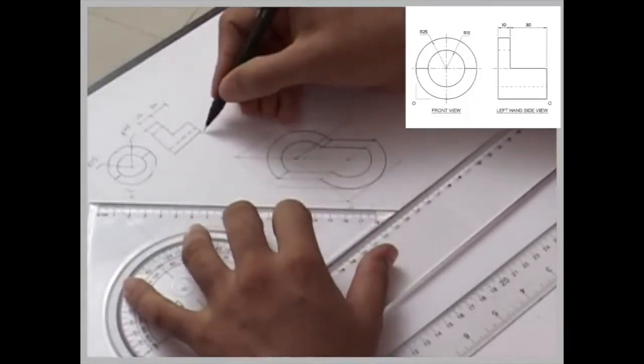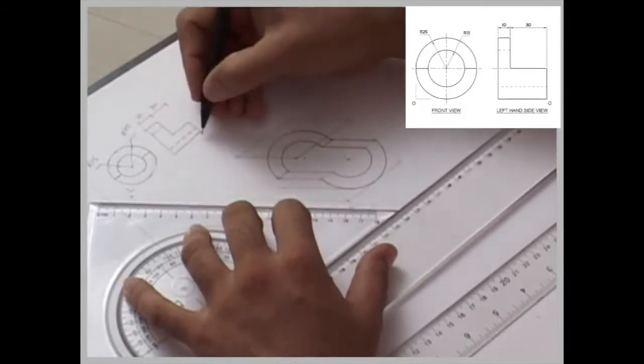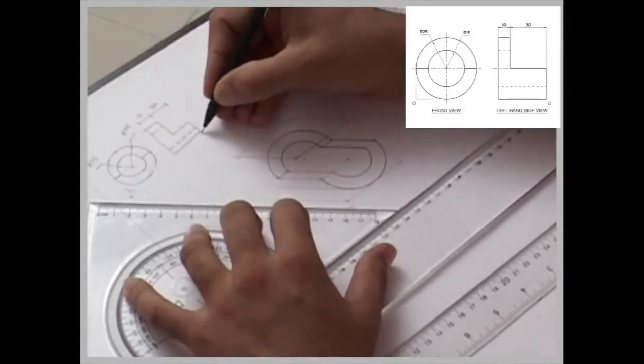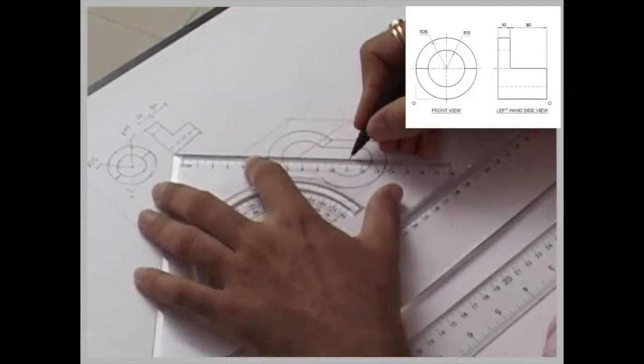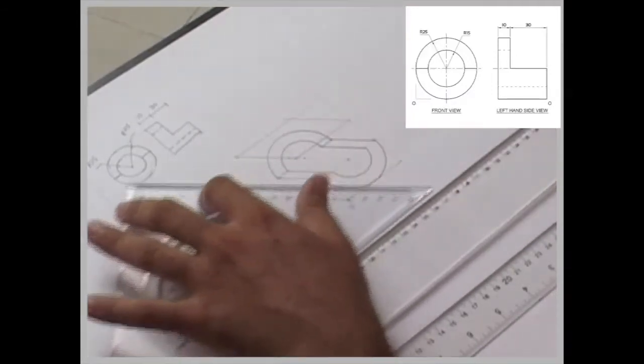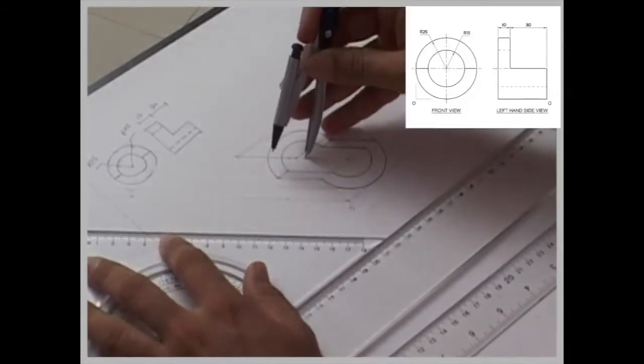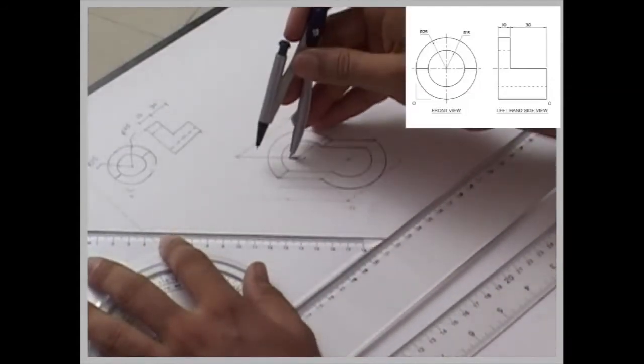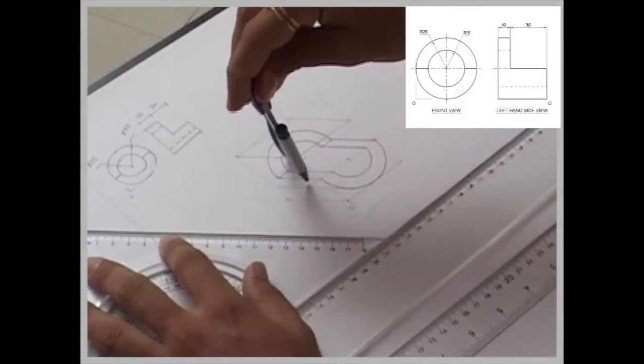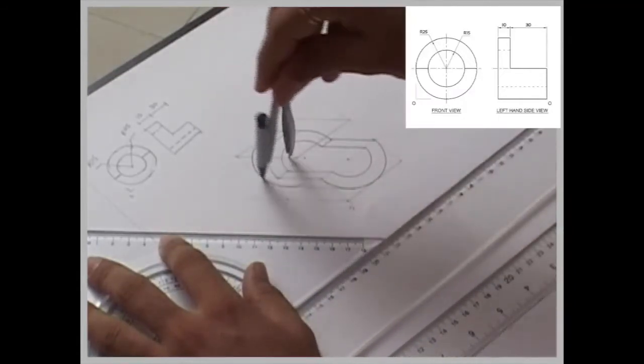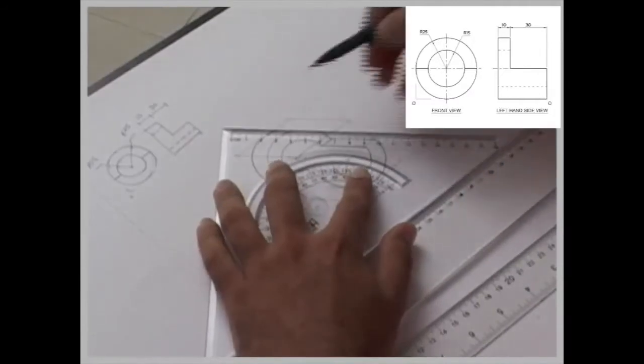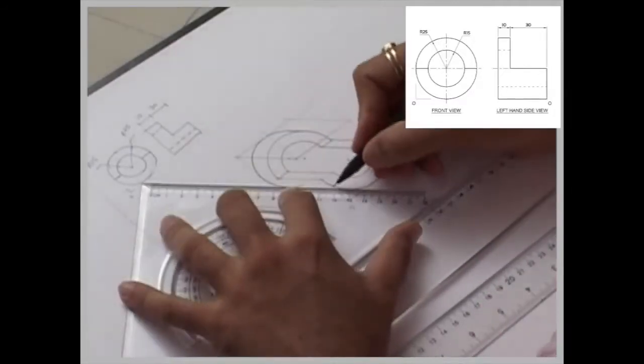And as you see this circle, it is how long? 40 long. Now this outer line, over here if you see the length is 40. So we have to go behind by 40. Draw the circle. Draw tangent.